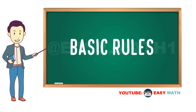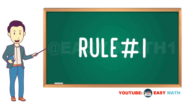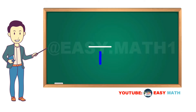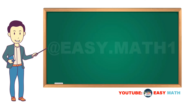Basic Rules — we have four basic rules for fractions. Rule number one: when the denominator is one, the fraction is always equal to the numerator. For example, seven over one is equal to seven.